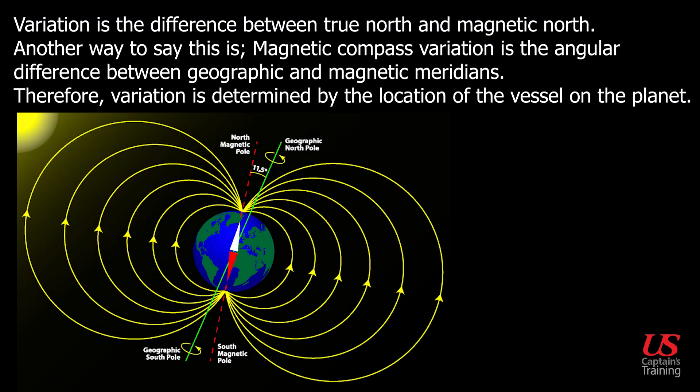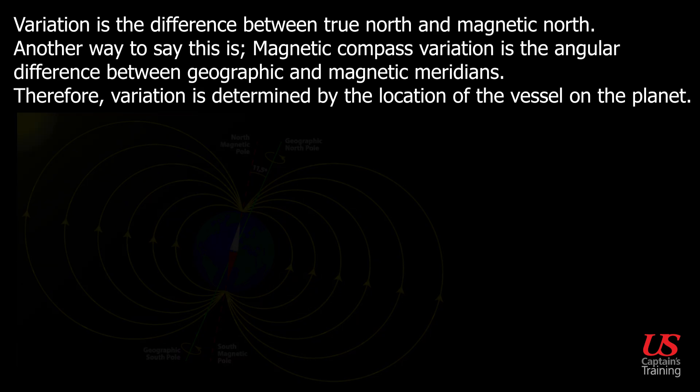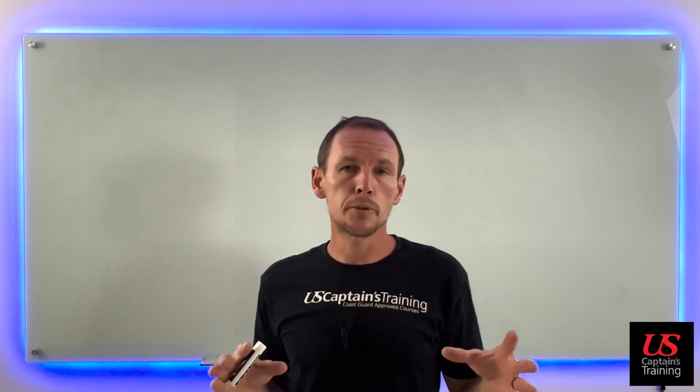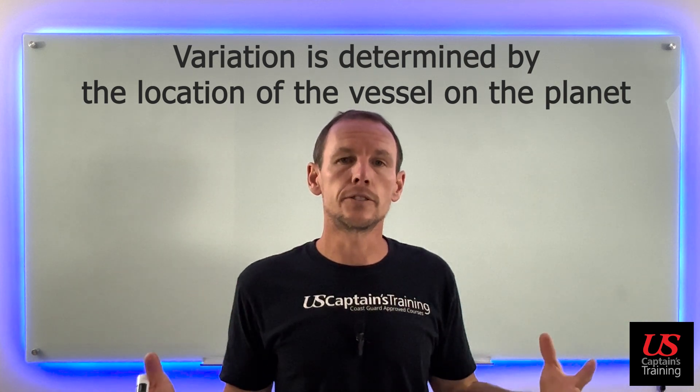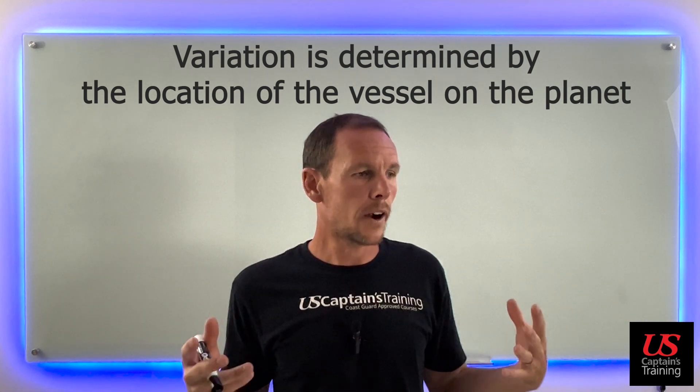Variation is the difference between true north and magnetic north. Another way to say this: magnetic compass variation is the angular difference between geographic and magnetic meridians. Therefore, variation is determined by the location of the vessel on the planet. The main thing to remember — variation is where you are on the planet that causes your variation.